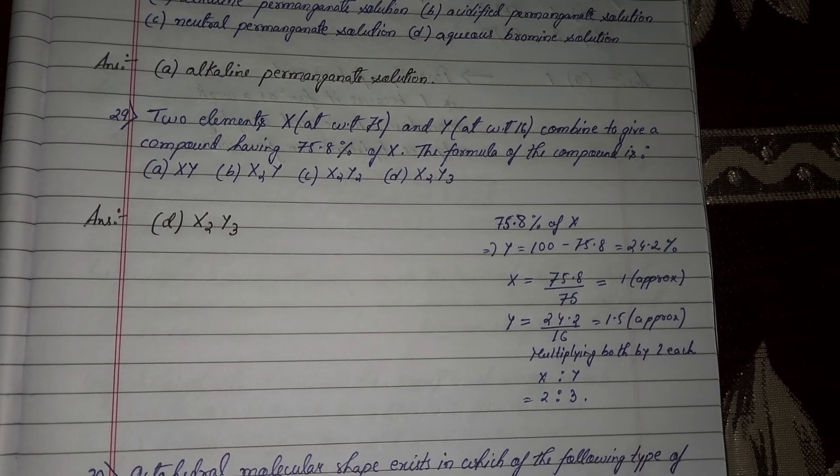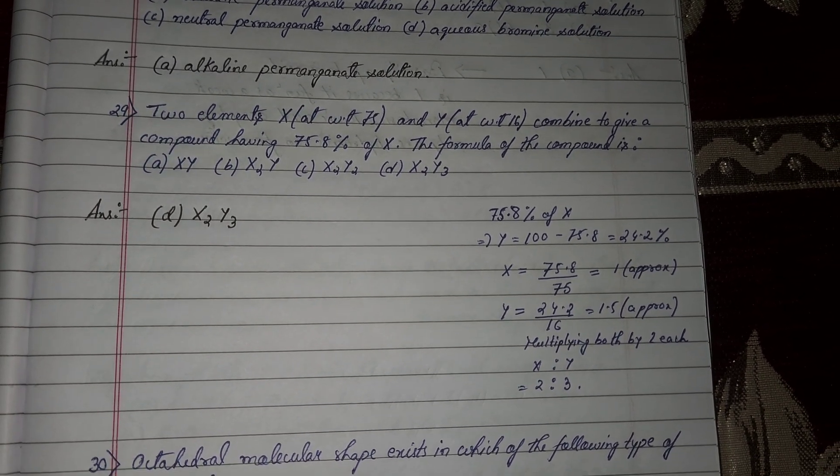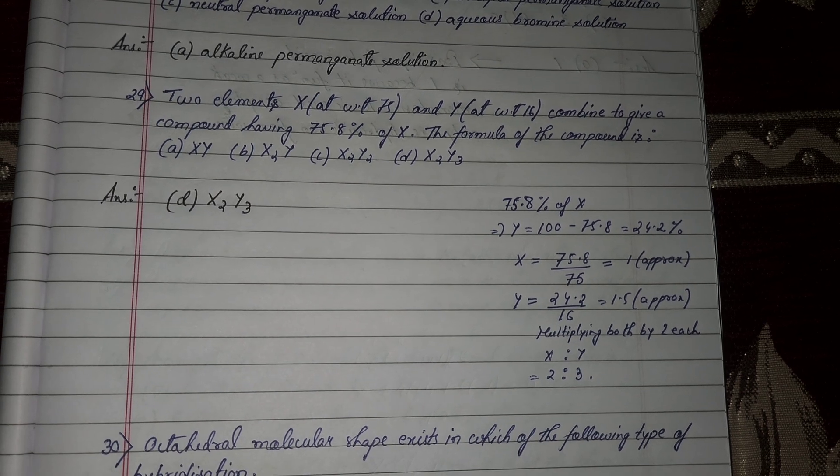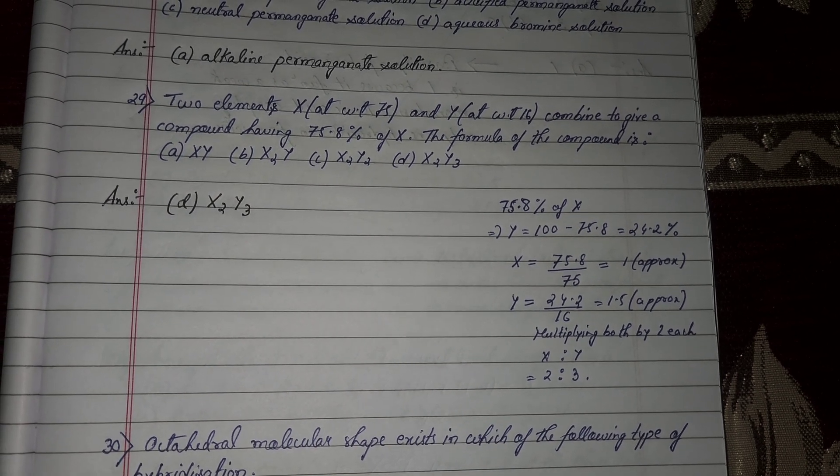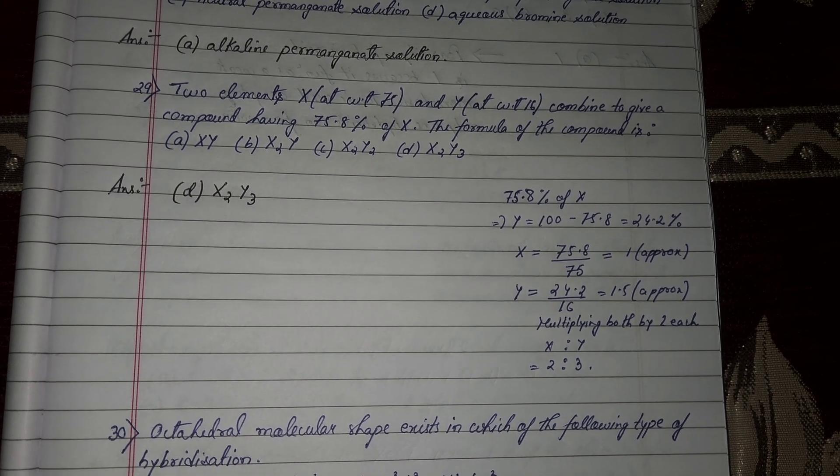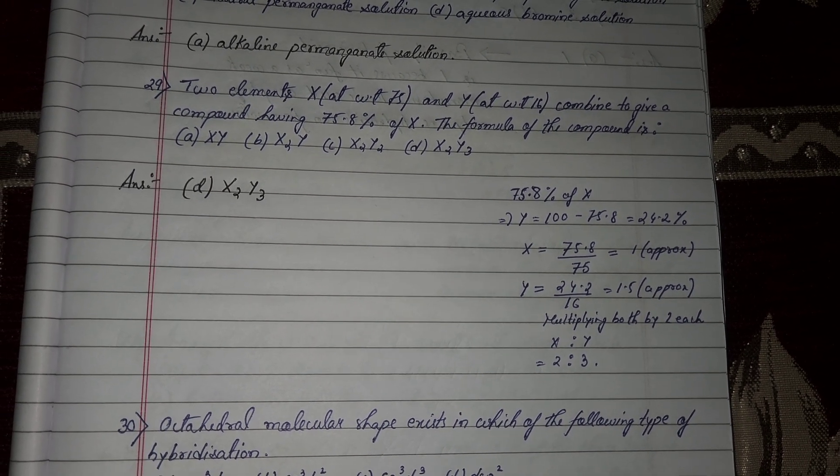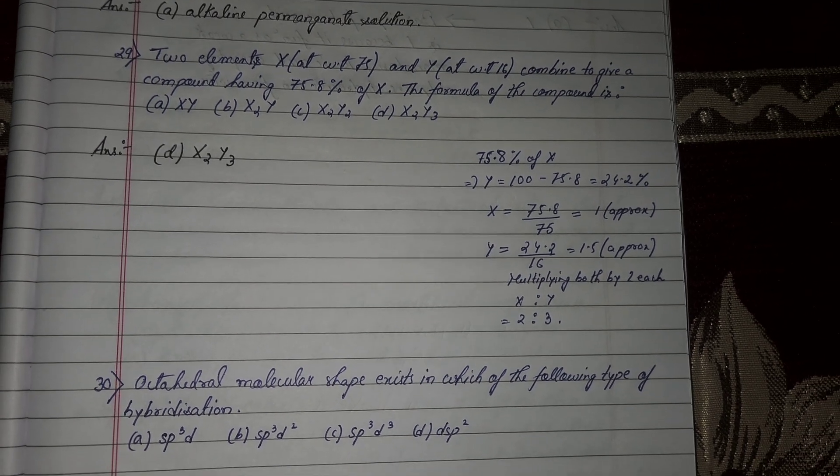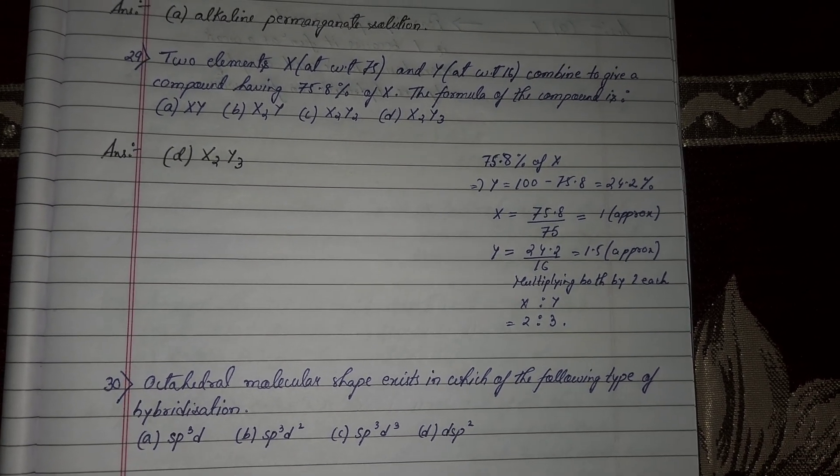Next question number 29, 2 elements X atomic weight 75 and Y atomic weight 16 combined to give a compound having 75.8% of X. The formula of the compound is, 75.8% of X, Y is 100 minus 75.8, that is 24.2%.